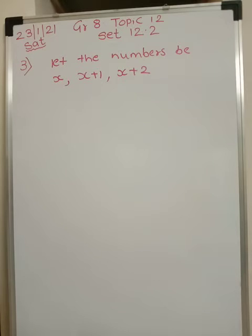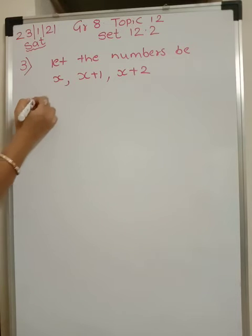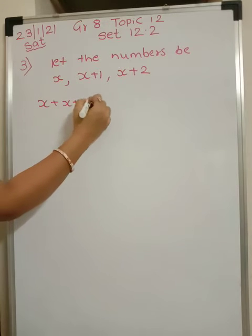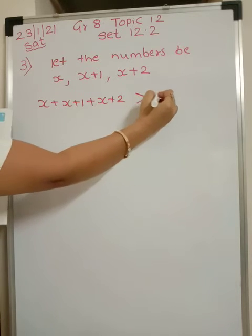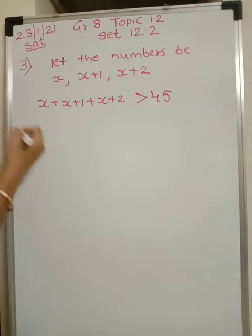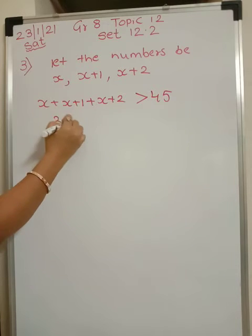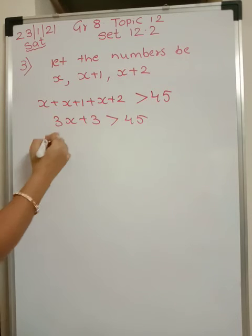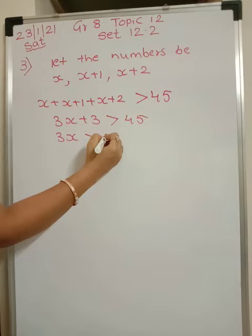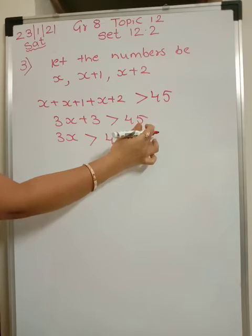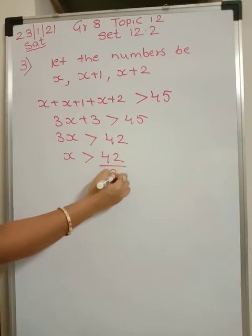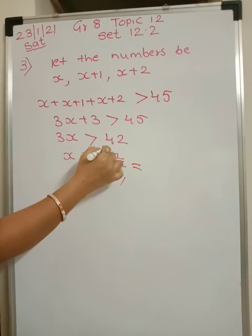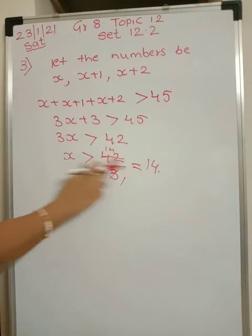The sum is more than 45 but less than 54. Add up x plus x plus 1 plus x plus 2, which should be greater than 45. So 3x plus 3 is greater than 45, meaning 3x is greater than 42 — since 3 transferred gives 45 minus 3 is 42. So x is greater than 42 divided by 3, which is 14.